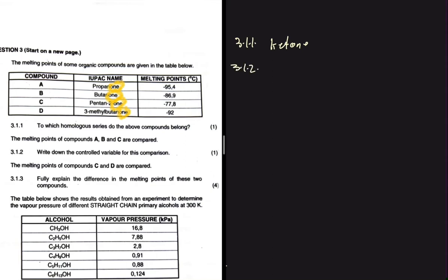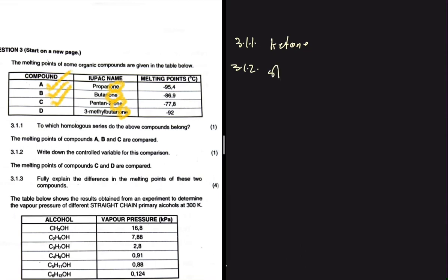Question 3.1.2 compares the melting points of compounds A, B, and C, and asks for the control variable. The control variable is what we keep the same to make the comparison fair. Looking at A, B, and C, they are all ketones and they are all straight-chain. So the control variable is that we are using straight-chain ketones.